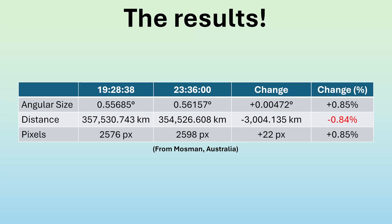Here are the results. The first two rows are straight from Stellarium — it predicts a change in angular size of 0.85%, due to the distance shrinking by 0.84%. You might wonder why that number isn't 0.85% as well — that's because the 'double the distance, half the angular size' idea isn't technically correct; it's a good approximation for small angles but breaks down as those angles get bigger. In the first photo the moon was 2,576 pixels wide and in the second one it's 2,598 pixels wide — 22 pixels bigger — which is a change of 0.85%.